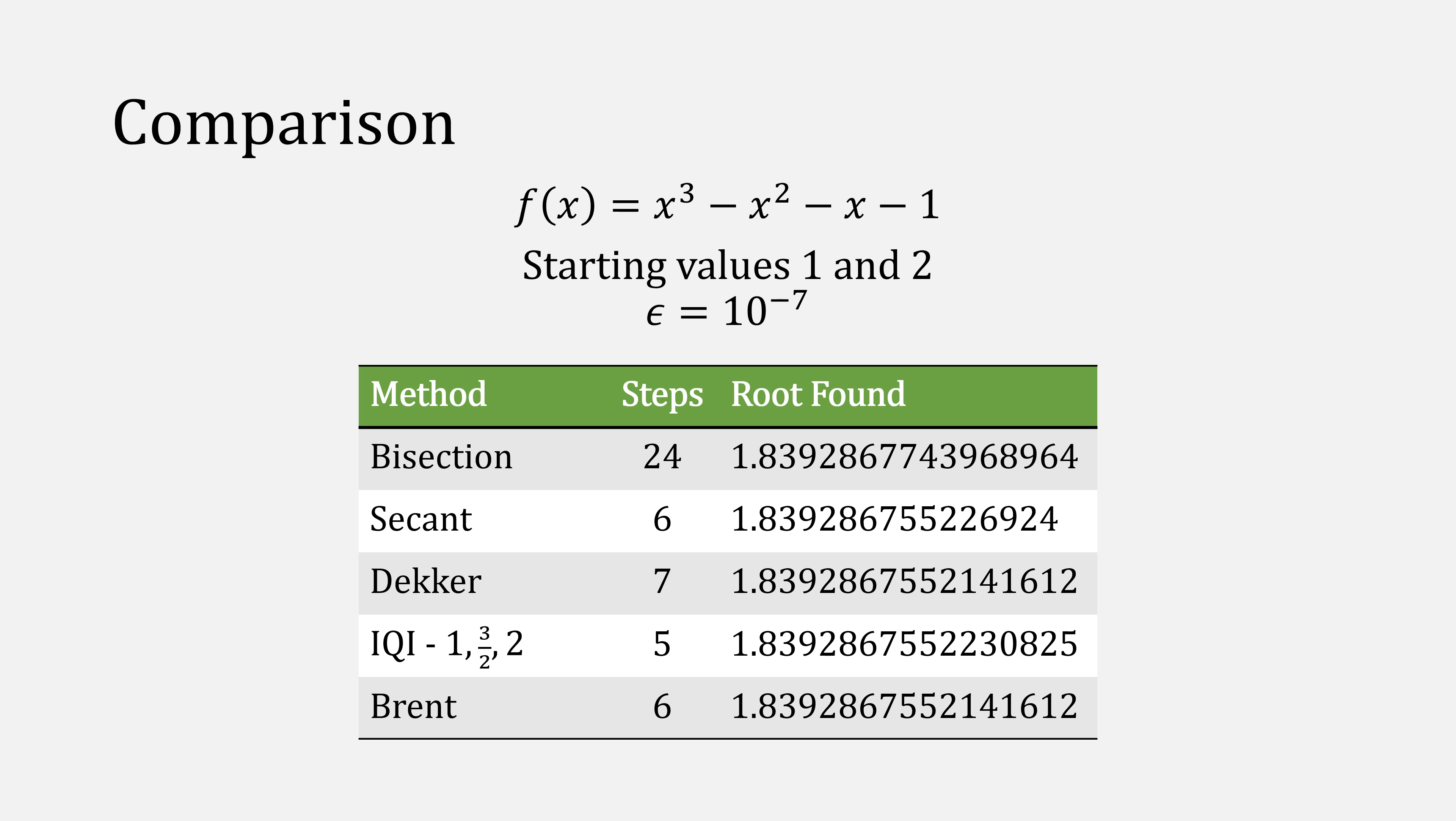And Brent's method would have taken the same length as inverse quadratic, except recall again, the first iteration only has two starting points, so it can't use the inverse quadratic.